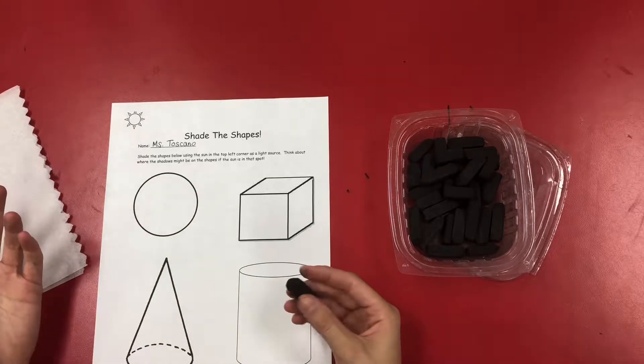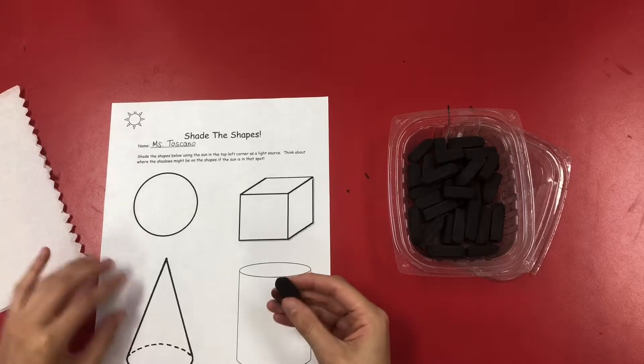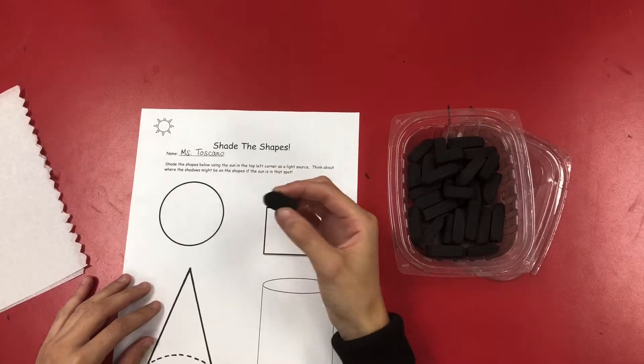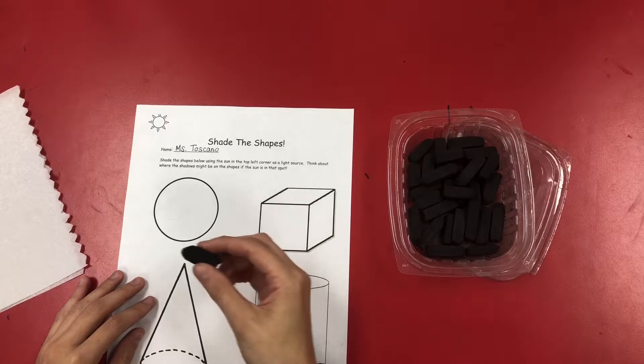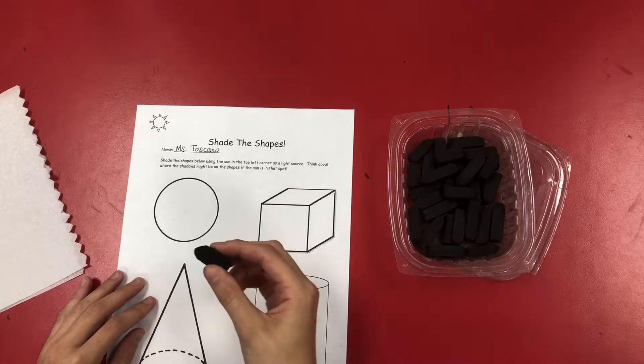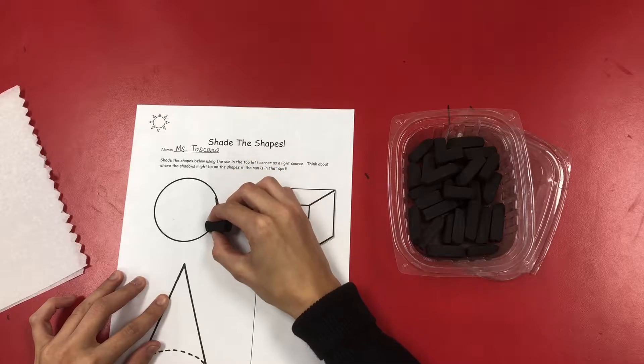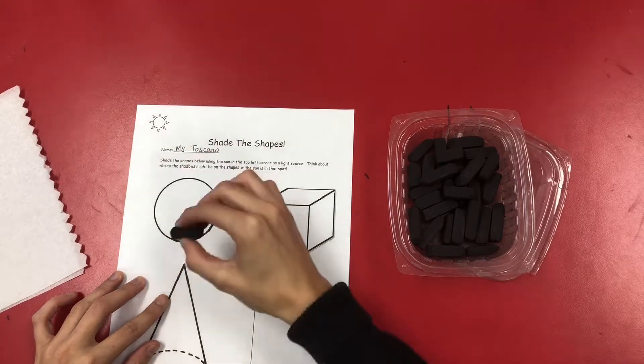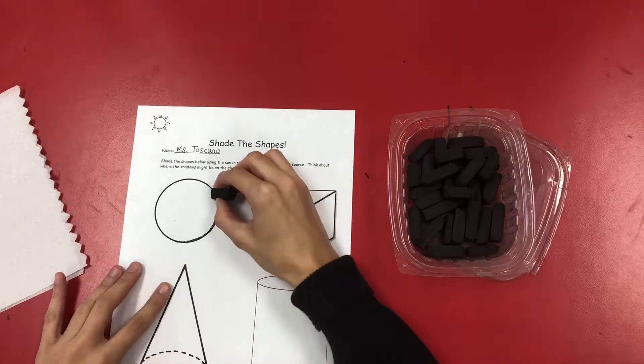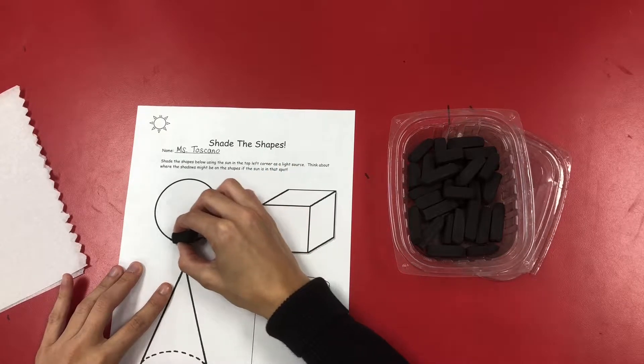You draw with the charcoal the same way you would with a crayon or a pencil. With the charcoal, you're going to draw with the shape. Notice when I'm taking my charcoal, I'm going to draw with the shape. I'm not going up and down because it's a circle—I'm going to draw in a circular motion.